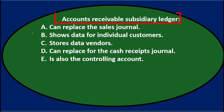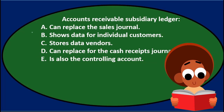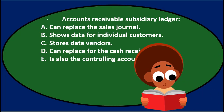Next question: accounts receivable subsidiary ledger — A) can replace the sales journal, B) shows data for individual customers, C) stores data for vendors, D) can replace the cash receipts journal, or E) is also the controlling account.